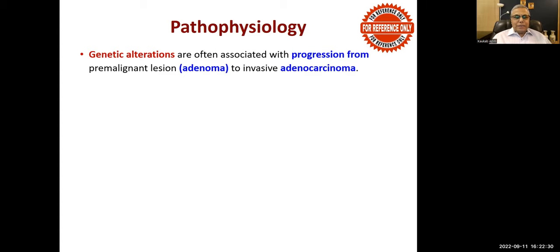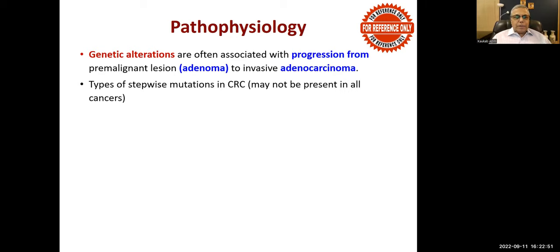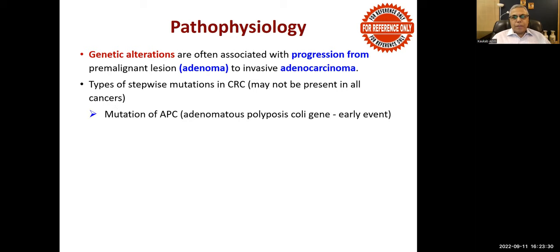The pathophysiology section is for reference only. There are genetic alterations that lead to colorectal cancer, often associated with progression from a pre-malignant adenoma to invasive adenocarcinoma. These stepwise mutations accumulate - one mutation occurs, then after a few years another occurs in the same cell, then a third, and so on. After sufficient mutations accumulate in a cell, it becomes cancerous and starts dividing in an uncontrollable fashion.